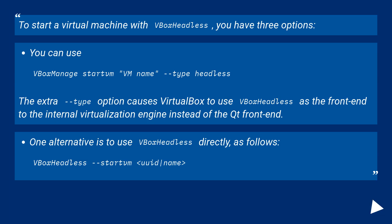From VirtualBox Manual Chapter 7, Remote Virtual Machines: to start a virtual machine with VBoxHeadless, you have three options. You can use VBoxManage startvm <VM name> --type headless. The extra --type option causes VirtualBox to use VBoxHeadless as the frontend to the internal virtualization engine instead of the Qt frontend.